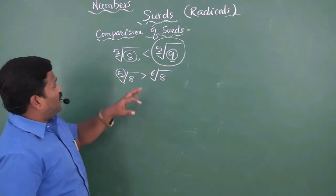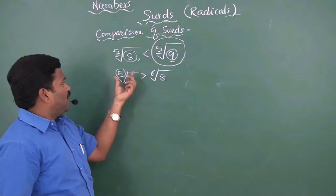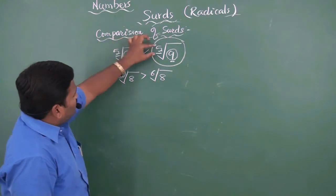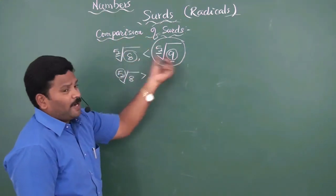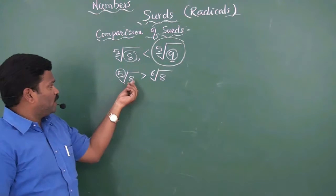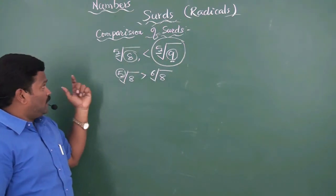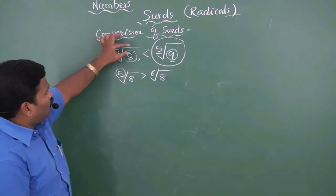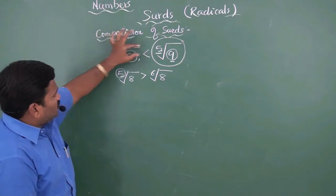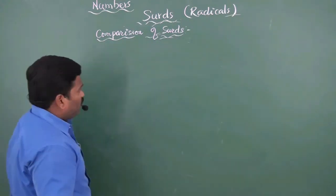We can compare radicals in two ways. The first way is by making the radicands the same, then comparing the orders. Or make the orders of the radicals the same, then compare the radicands. Making the orders same and then comparing radicands is more effective and easier. Let us see one example.